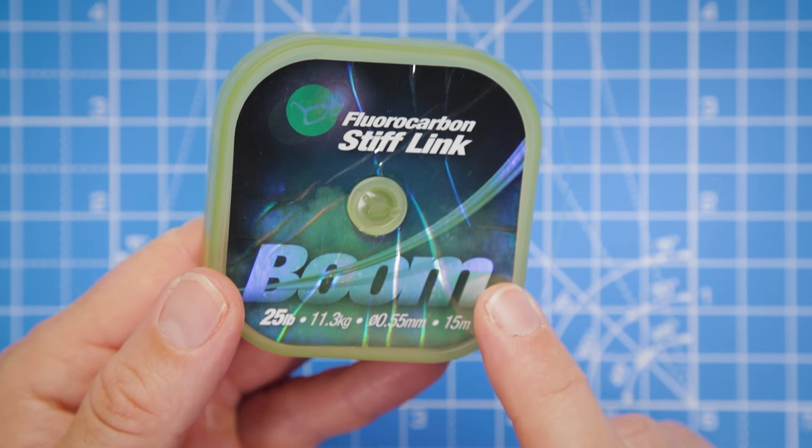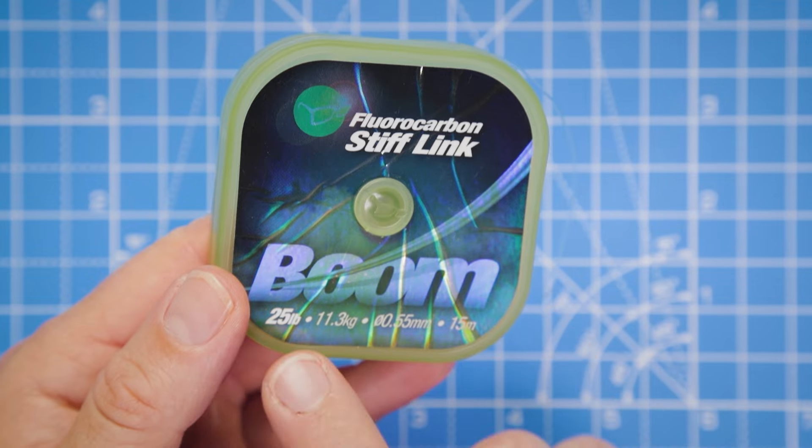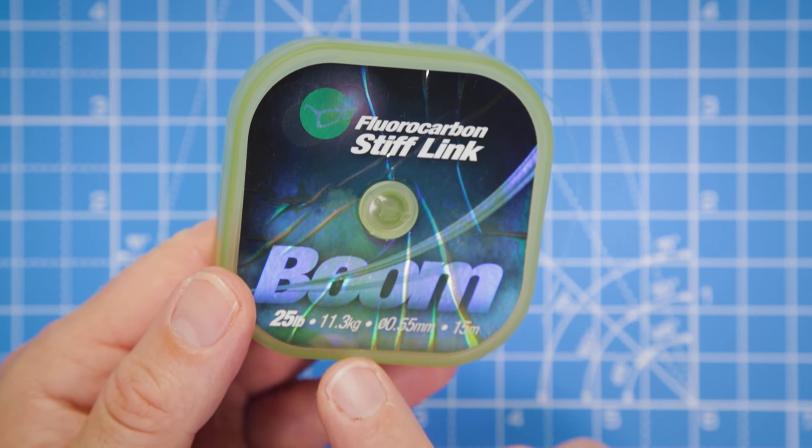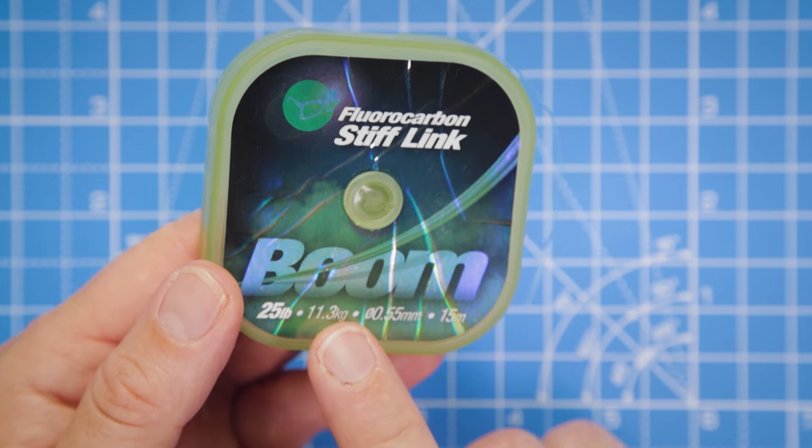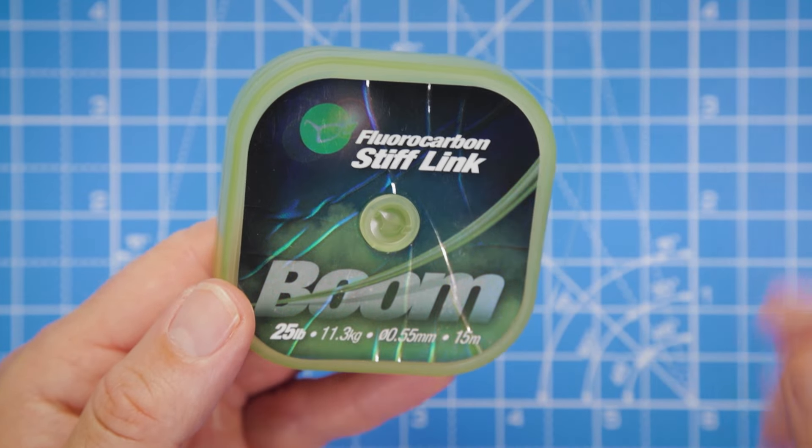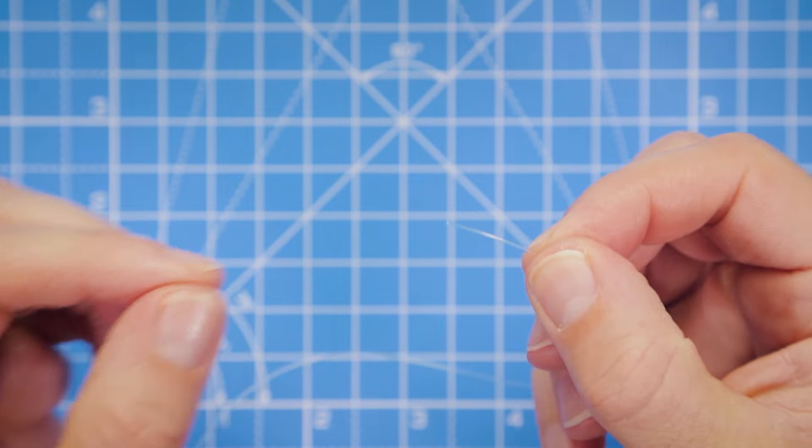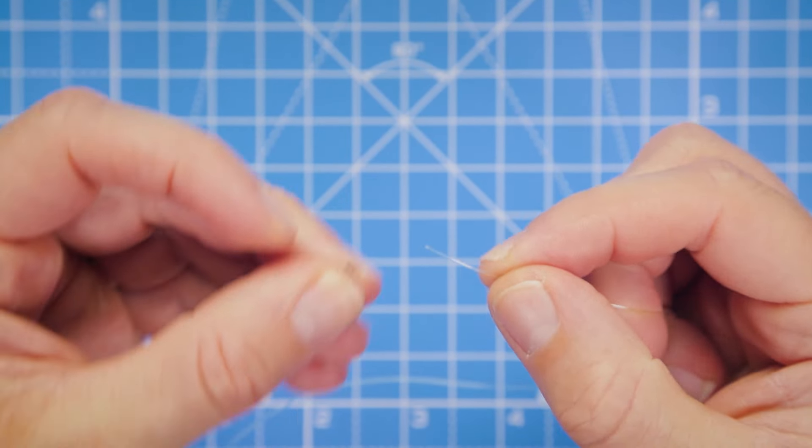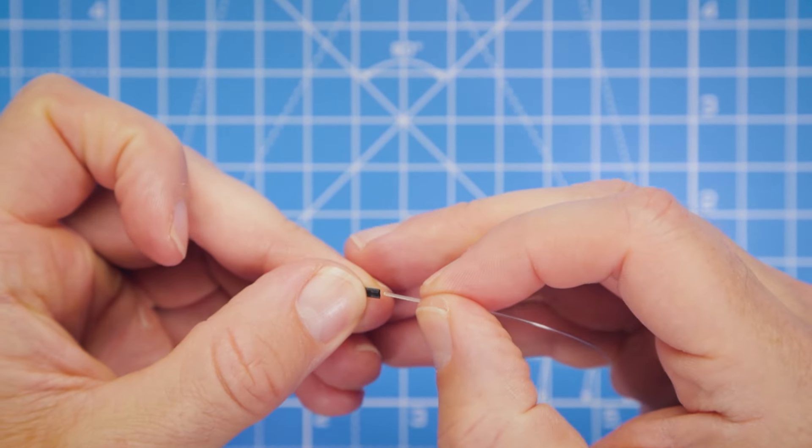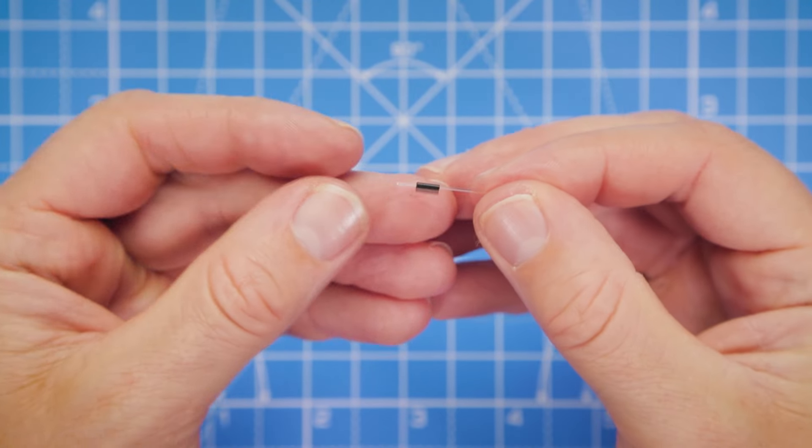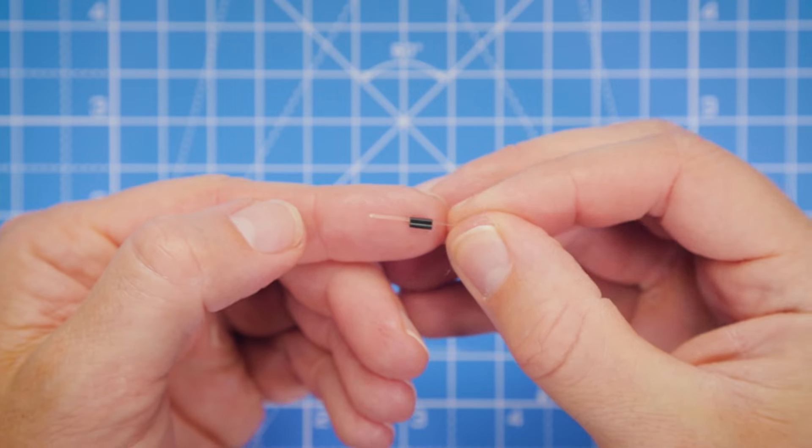Now it's time to put our boom section together. As I said earlier, we're using the boom material in the 25 pound breaking strain, which means we need to use the size small crimp. Let's take a bit of the material off the spool, then take our crimp and simply thread the material into one side of the crimp. You'll find there's two barrels in each crimp.